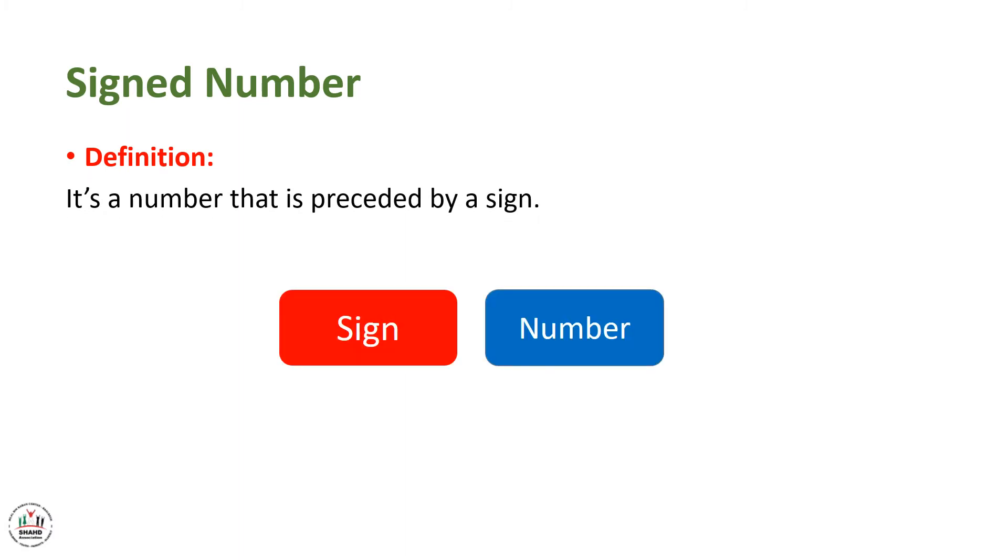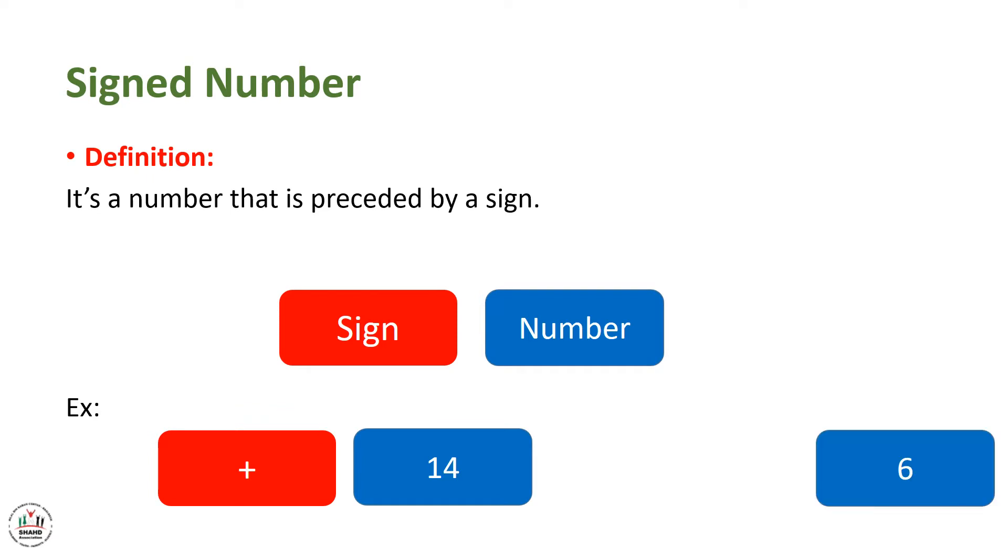Signed number. What is a signed number? It's a number that's preceded by a sign. So the sign always comes before the number. And here we have an example, plus 14. So plus 14 here, we can consider it as a signed number. Also minus 6 represents a signed number.